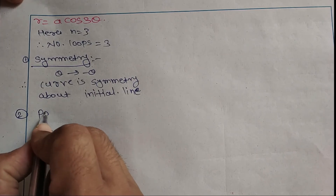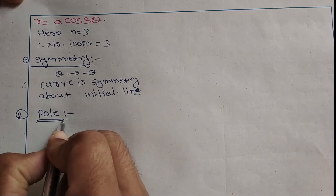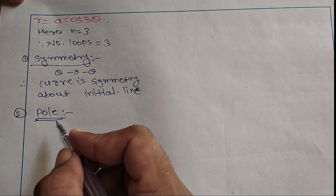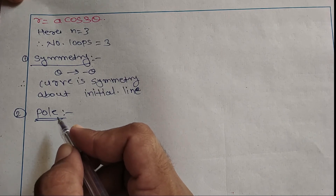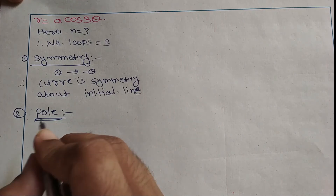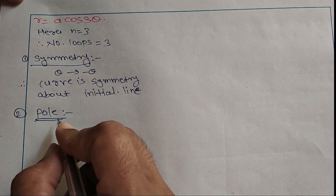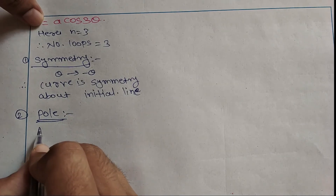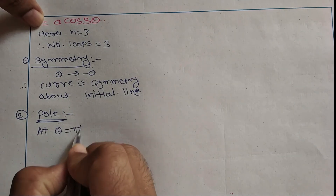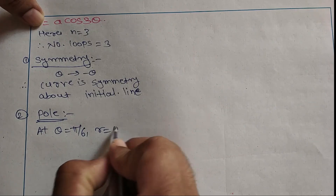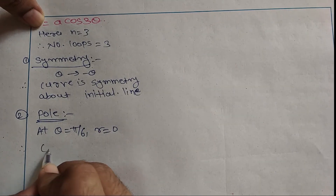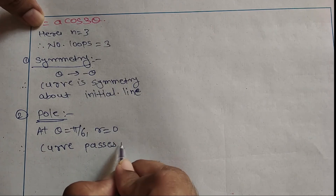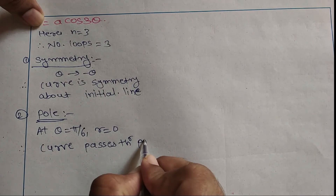Second, we have to check whether the curve passes through the pole. For which value of θ does r become 0? For θ = π/6, r becomes 0. Therefore, the curve passes through the pole.